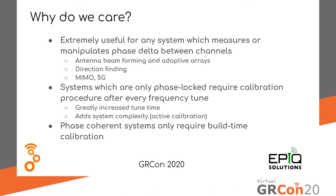So why do we care about this? In a lot of modern systems where we're using things to determine what the phase difference is between two signals, we need to know what it is in our LO because that ultimately decides what's in the baseband. Think of things like antenna beamforming, adaptive arrays, direction finding — and the 5G stuff is using all of those things. If you have a system that is only phase locked, you have to have some way in the system to determine, when you tune frequency, what that phase relationship of your LOs are.